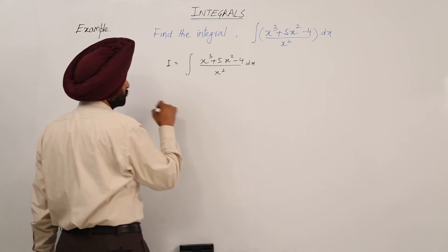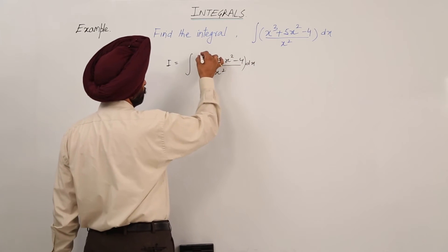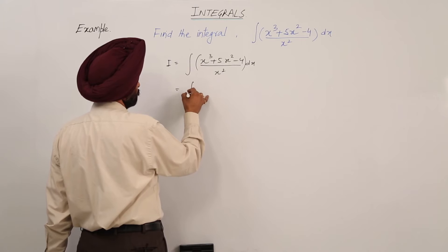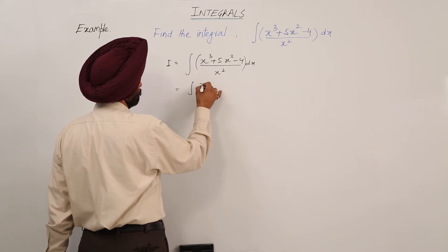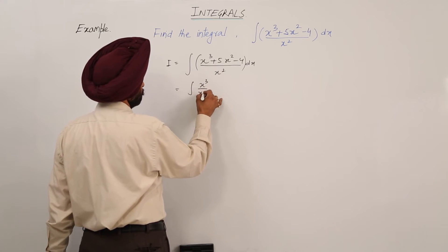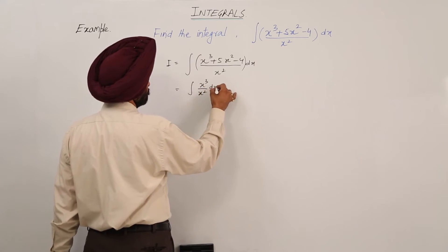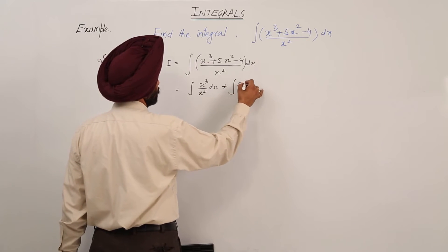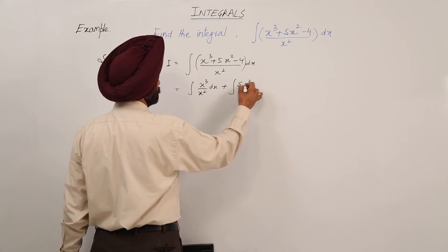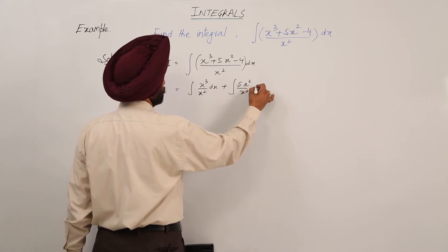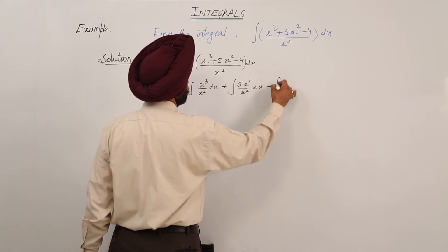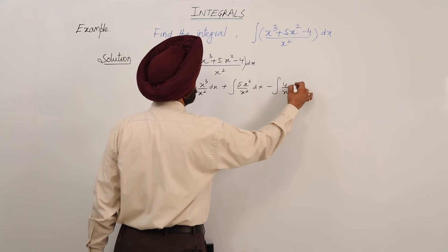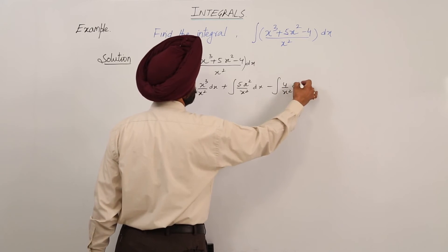Now to this question, what we can write it? We can write it as integration of x cube upon x square dx, plus integration of 5x square upon x square dx, minus integration of 4 upon x square dx.